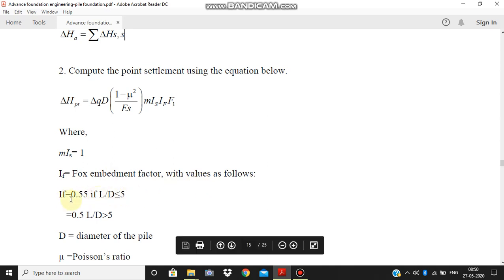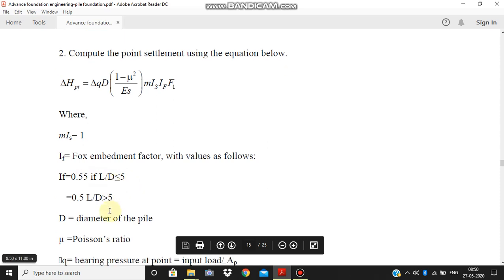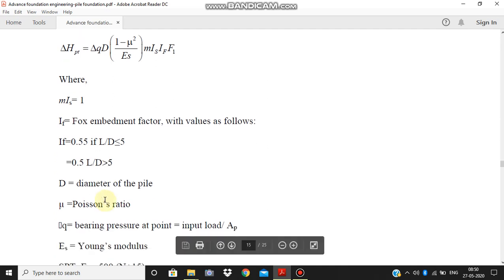I_f is the Fox embedment factor, with values as I_f equal to 0.55 if L by D is less than or equal to 5. I_f can also be equal to 0.5 into L by D when L by D is greater than 5, where D is the diameter of the pile.